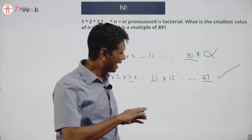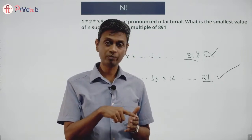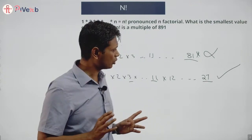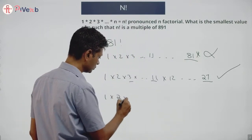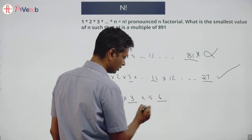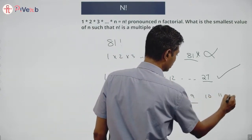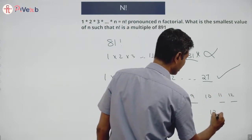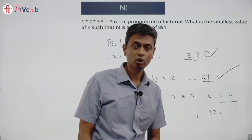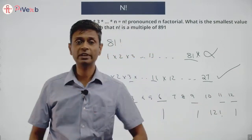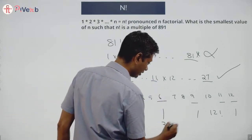I know the method: I need to keep track of every time I pick up a factor of 3, and also get one factor of 11. So: 1, 2, 3 — gives me a 3; 4, 5, 6 — gives me a 3; 7, 8, 9 — gives me two 3s; 10, 11, 12 — gives me a 3 and an 11. So 12 factorial will work because we collect four 3s and an 11. But wait — 9 gives us two 3s, so we're still missing something.